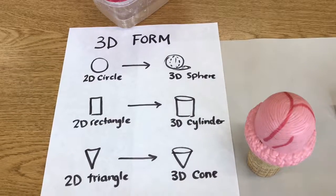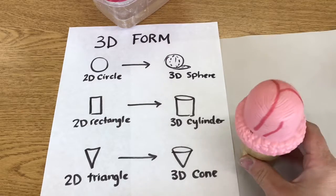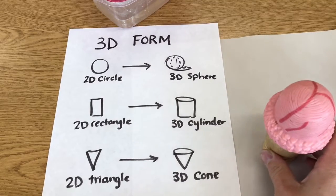Today we're going to be talking about 3D forms. Forms are what we call shapes that are three-dimensional. They can stand up on their own. And we're going to make ice cream cones.